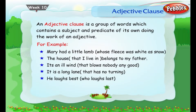An adjective clause is a group of words which contains a subject and predicate of its own, doing the work of an adjective. Examples: 'Mary had a little lamb whose fleece was white as snow.' 'The house that I live in belongs to my father.' 'It's an ill wind that blows nobody any good.' 'It is a long lane that has no turning.' 'He laughs best who laughs last.'